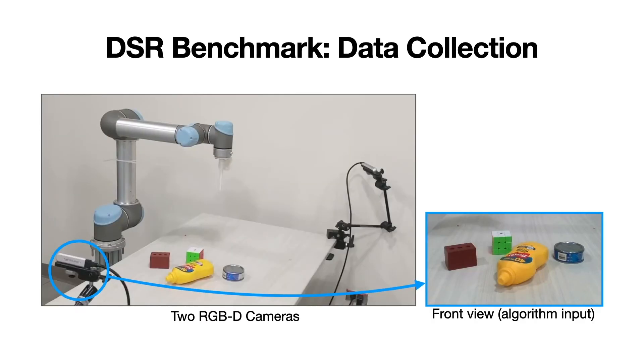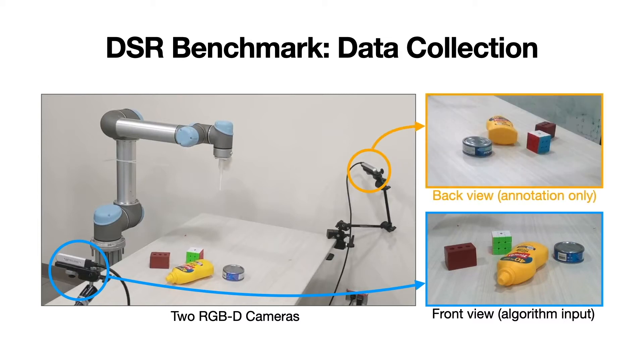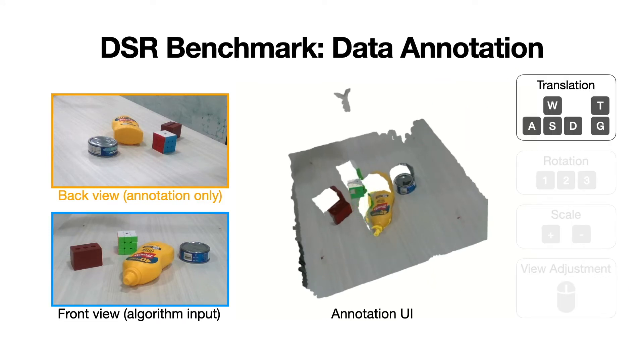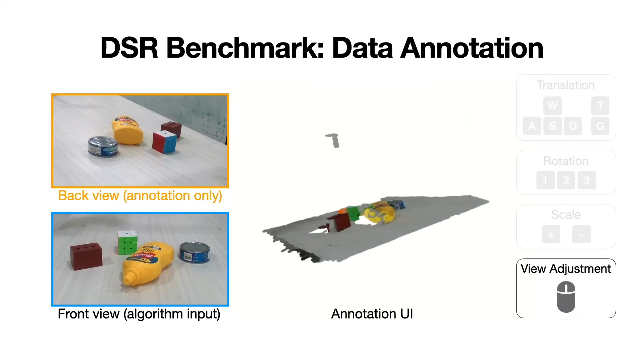To quantitatively evaluate the algorithm, we constructed a real-world benchmark data with robot interaction and ground truth object motion. To annotate objects pose accurately during occlusion, another camera is used to capture images from the back view. To annotate the object pose for each interaction step, the annotator selects and controls a 3D object mesh with a keyboard to match the combined 3D point clouds from two cameras.